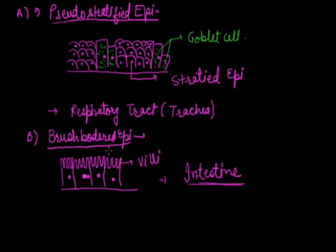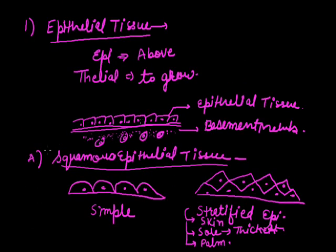This brush border epithelium can also be pseudostratified. If some elongated and glandular structures are present, then it is called pseudostratified brush border epithelium. This concludes the overview of epithelial tissue.